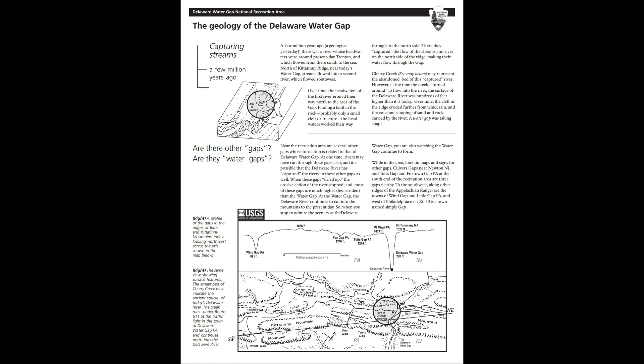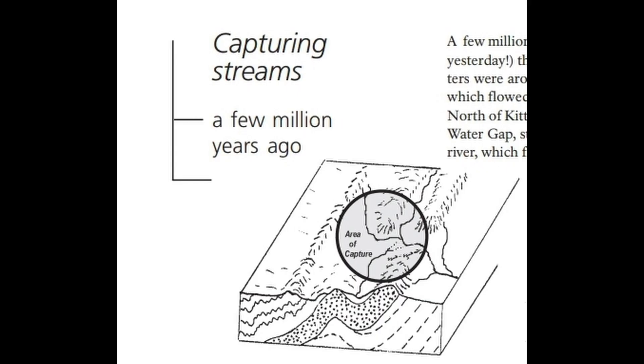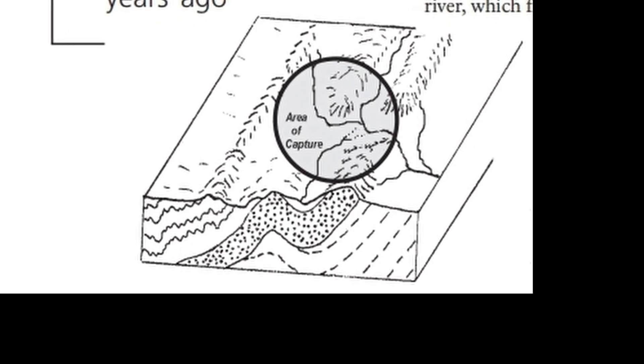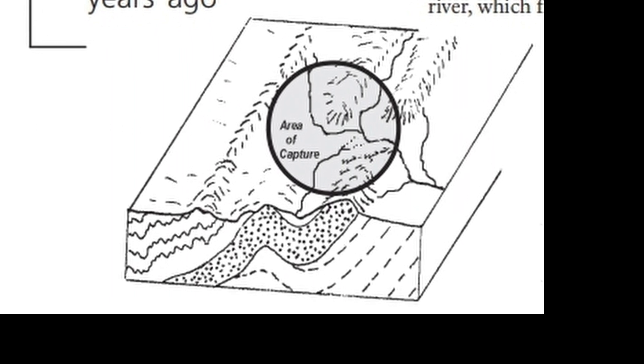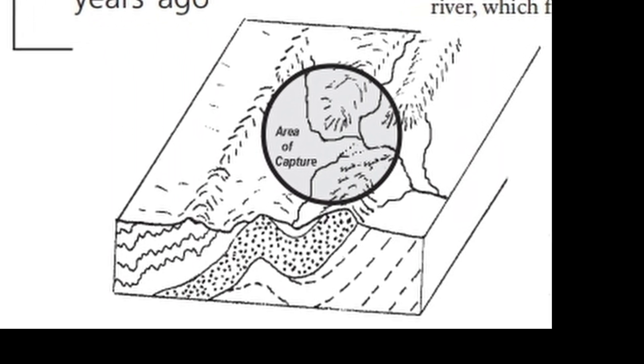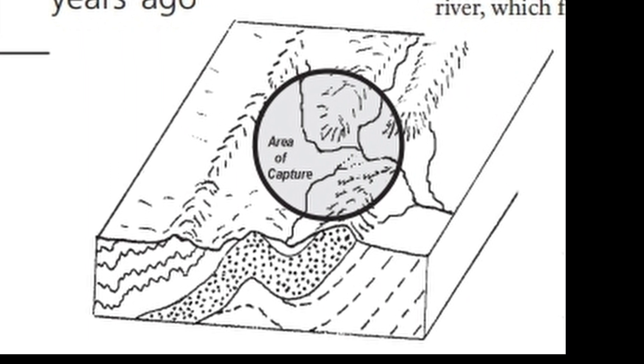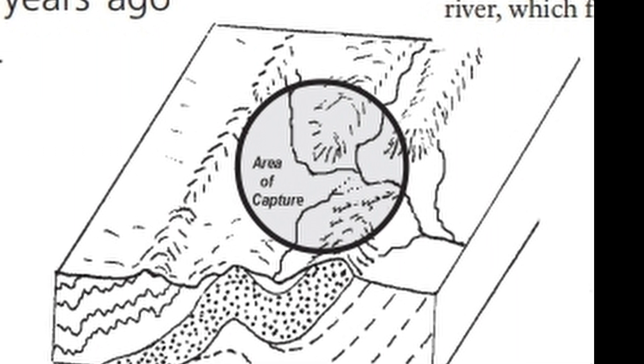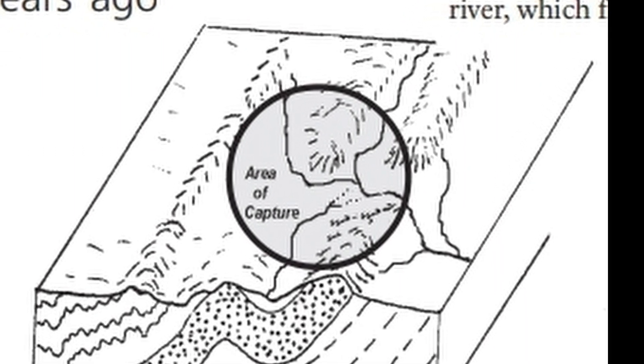The Geology of the Delaware Water Gap. A few million years ago, a geological yesterday, there was a river whose headwaters were around present-day Trenton, and which flowed from there south to the sea. North of Kittatinny Ridge, near today's Water Gap, streams flowed into a second river, which flowed southwest. Over time, the headwaters of the first river eroded their way north to the area of the gap. Finding a fault in the rock, probably only a small cleft or fracture, the headwaters worked their way through to the north side. There they captured the flow of the streams and river on the north side of the ridge, making their water flow through the gap.